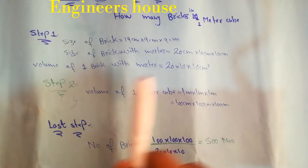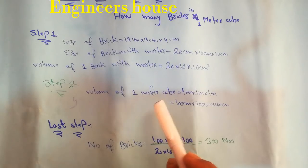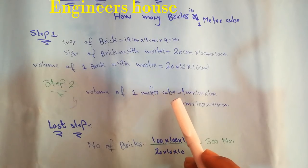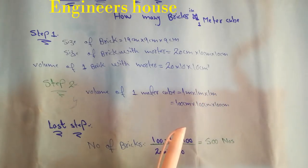Step 2: Volume of one meter cube is equal to 1 meter by 1 meter by 1 meter, which is equal to 100 cm by 100 cm by 100 cm.